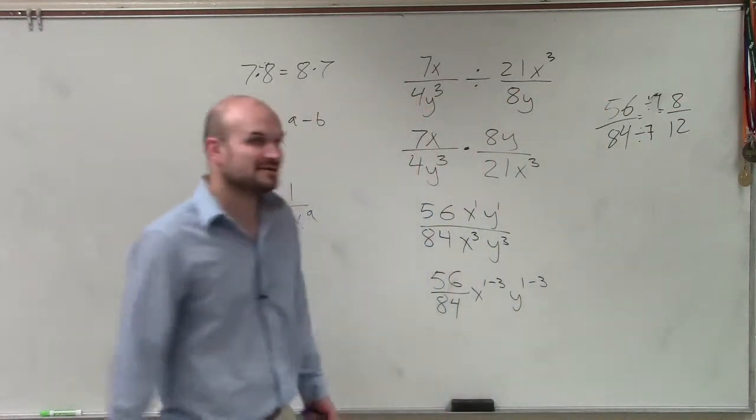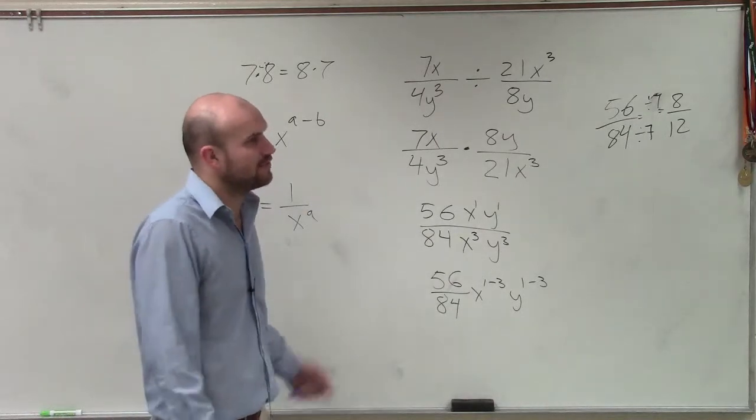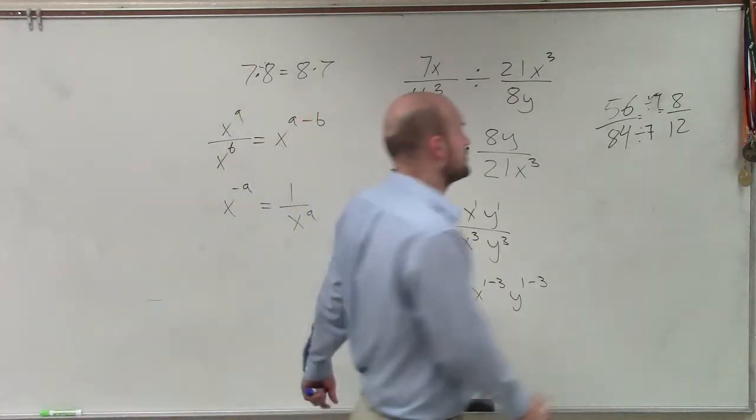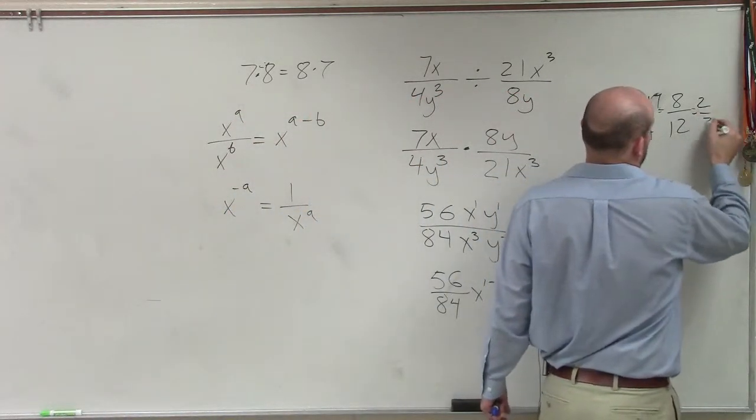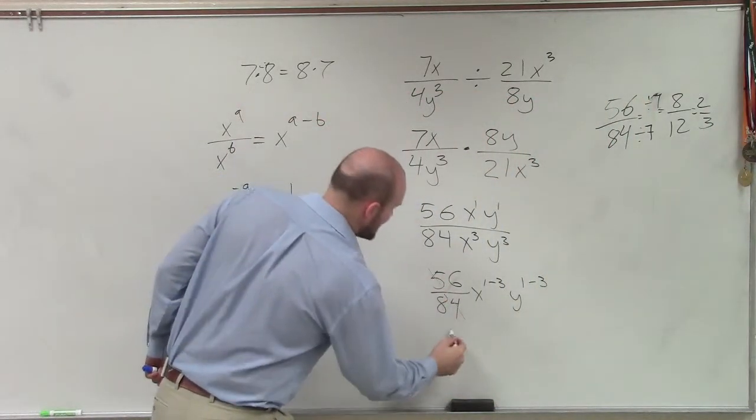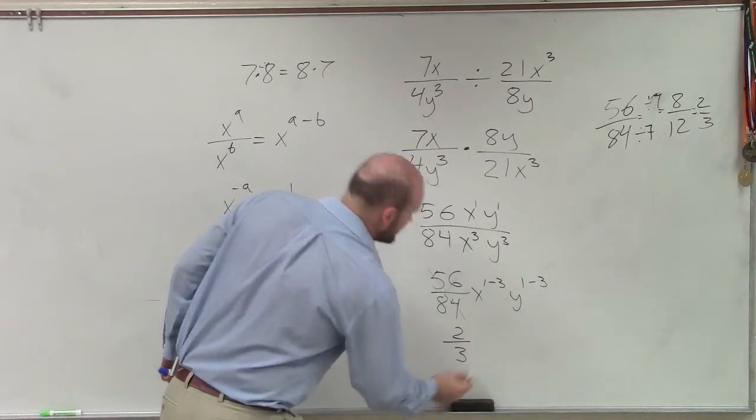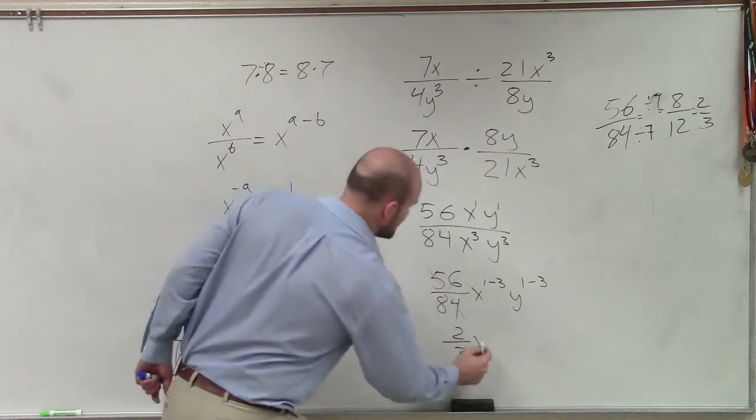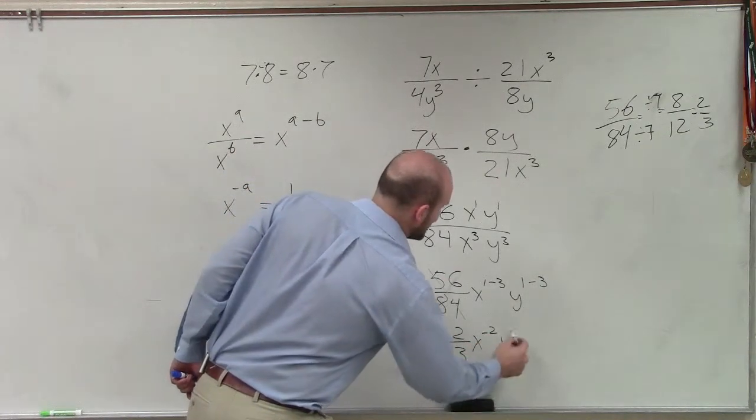And I can keep on reducing that, right? I can simplify 8 over 12. You can think of the number 4. 4 goes in 2 times. So therefore, I'm going to rewrite this as 2 divided by 3, x to the negative second and y to the negative second.